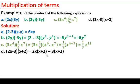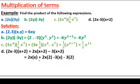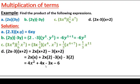So 2x is multiplied with (x plus 2), and minus 3 is multiplied with (x plus 2). Expanding: 2x times x is 2x squared, plus 2x times 2 is 4x, then minus 3 times x is minus 3x, and minus 3 times 2 is minus 6. We have like terms 4x and minus 3x — combining them gives x. So the simplified product is 2x squared plus x minus 6.